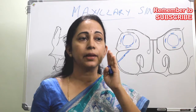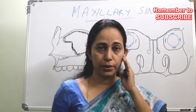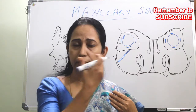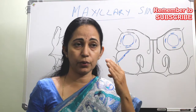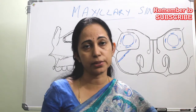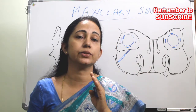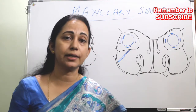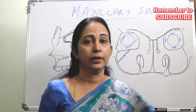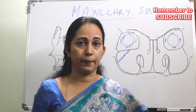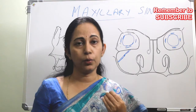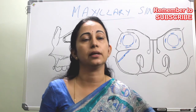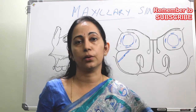Laterally comes mainly the infratemporal fossa. The posterior wall is laterally related to the infratemporal fossa and medially related to the pterygopalatine fossa. In the posterior wall, there are canals for the posterior superior alveolar nerves and vessels. In the postero-inferior part, there is the maxillary tuberosity, to which the medial pterygoid muscle is attached.